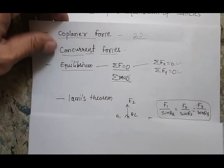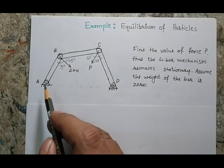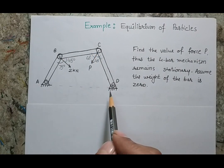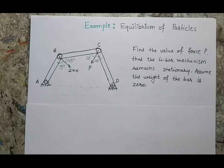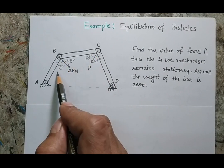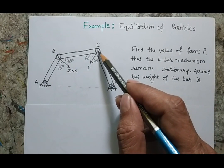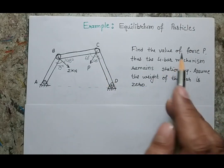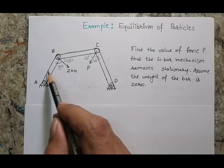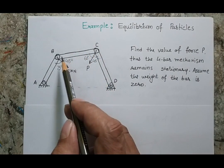Let's start with the first problem. There is a four-bar chain mechanism defined by bars AB, BC, CD, and DA. DA is the fixed bar. We are applying a 2 kilonewton force at point B — its direction is 45 degrees from bar BC and 75 degrees from bar AB. We are also applying a second force P, and the system is in equilibrium. We are interested in writing the equilibrium of points B and C.